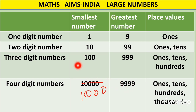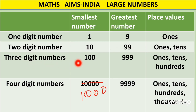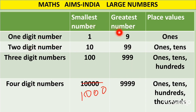If you look at this chart, you can see that all the greatest numbers have nines in them. One digit number has one nine, two digit greatest number has two nines, greatest three digit number has three nines, and greatest four digit number has four nines. So if I ask you to write the greatest five digit number, it will have five nines.